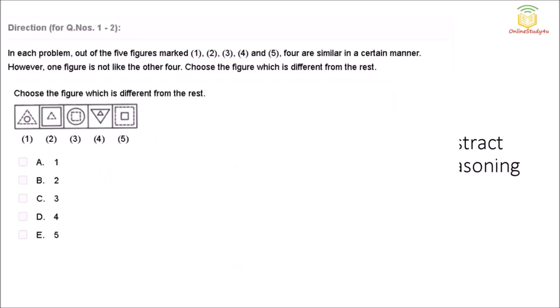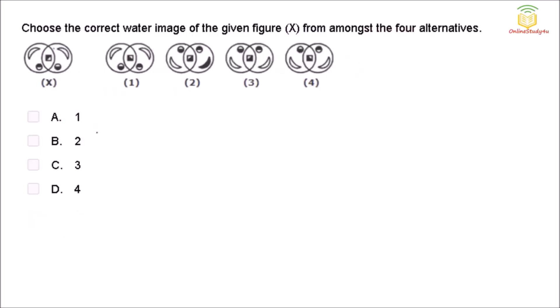Question: out of five figures, four are similar in a certain manner — choose the figure different from the rest. In every diagram, one figure is dotted: triangle is dotted here, triangle is dotted here, square is dotted here, square is dotted here, square is dotted here — but in the fourth one, nothing is dotted. So the fourth one is different.